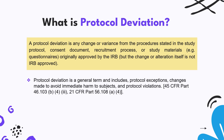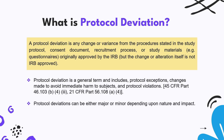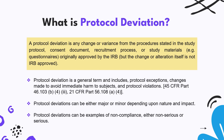These particular changes are unapproved — that is protocol deviation. Protocol deviation is a general term and includes a variety of factors such as protocol exception, changes made to avoid harm to subjects, and protocol violation, which is also a subset of protocol deviation. These deviations are mentioned in 45 CFR Part 46 and 21 CFR Part 56. Protocol deviation can be either a major or minor deviation based on the nature and impact, and can be categorized as serious or non-serious.